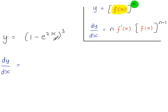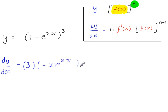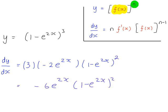Differentiating (1 minus e to the 2x) raised to the power of 3: the power 3 comes to the front, then we have the derivative of what's inside the brackets. Differentiating 1 gives nothing; differentiating minus e to the 2x gives minus 2e to the 2x. Then the original function (1 minus e to the 2x) to the power of n minus 1. Multiplying 3 by minus 2 and simplifying gives the final result.